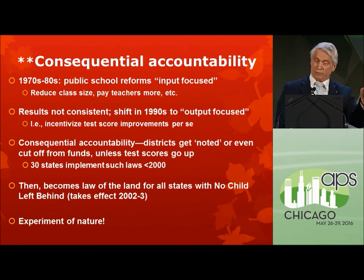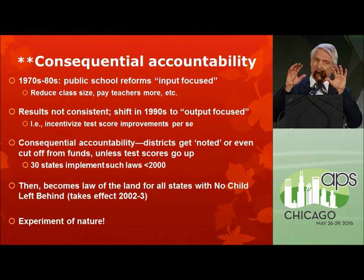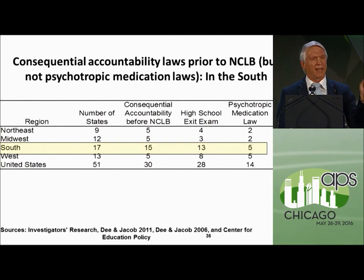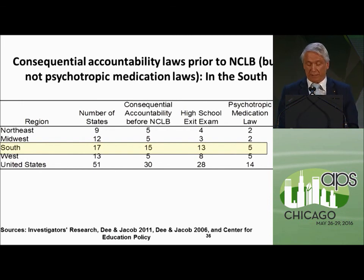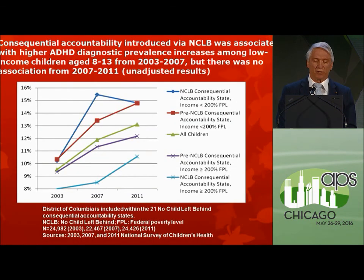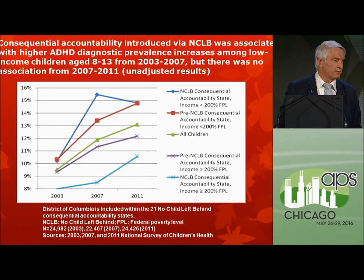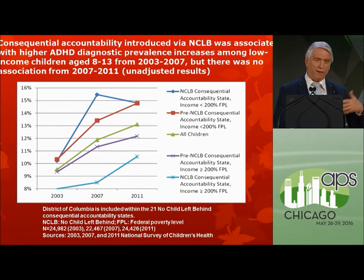We talked about this in our book, The ADHD Explosion. Those early accountability states were mainly southern states, which is circumstantial evidence. But in a triple difference regression model of this natural experiment, for the 21 states and DC that suddenly got accountability in 2002–03, over the next four years, for the poorest kids — within 200% of the federal poverty level — their rate of ADHD diagnosis went up 59%. For private school kids in those states, and for the remaining 30 states that had these laws on the books already, they went up at or below the national average.